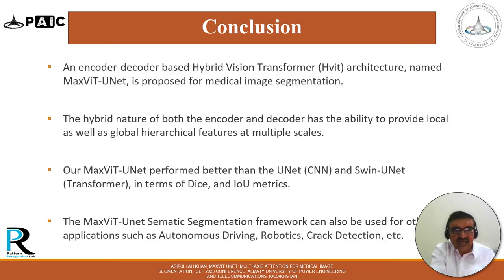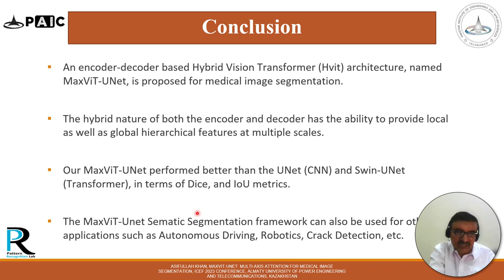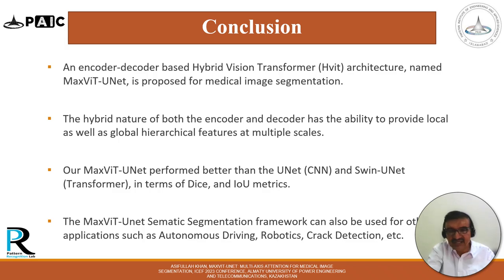In conclusion, an autoencoder-decoder based hybrid vision transformer architecture named MaxVIT-UNet is proposed for medical image segmentation, though it can also be used for other segmentation applications. The hybrid nature of both encoder and decoder provides local as well as global hierarchical features at multiple scales. MaxVIT-UNet outperformed UNet (CNN-based) and SWIN-UNet (transformer-based) in terms of DICE and IOU metrics, and can be applied to other applications such as autonomous driving, robotics, and crack detection.